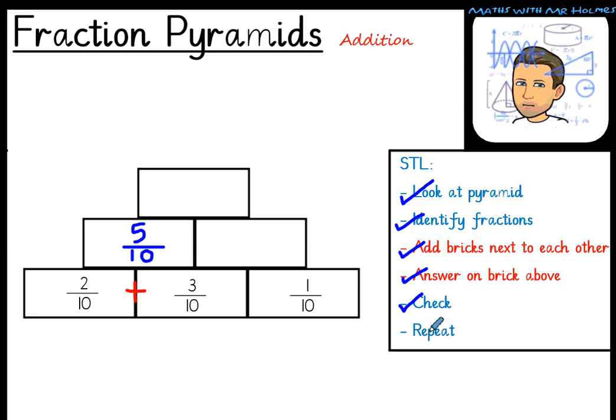And then we repeat. So let's go ahead and choose another two. We'll look at our pyramid. Identify the fractions. So three tenths and one tenth we haven't used. And we add the bricks next to each other. Let's go ahead and write our add sign in to remind us. Three tenths and one tenth. That equals four tenths.